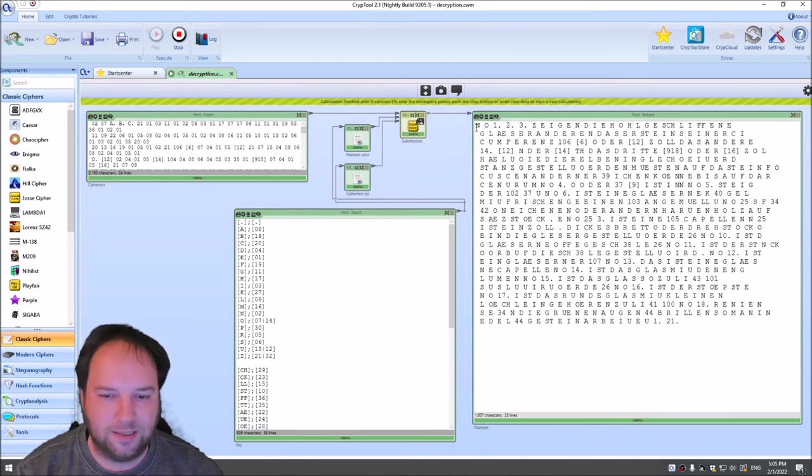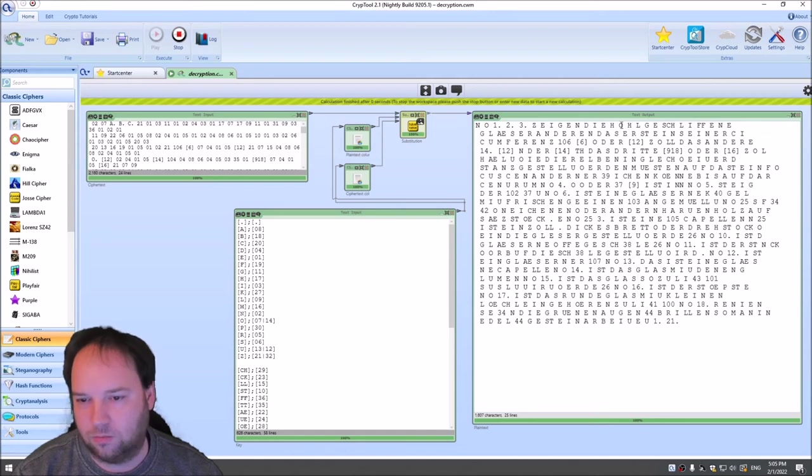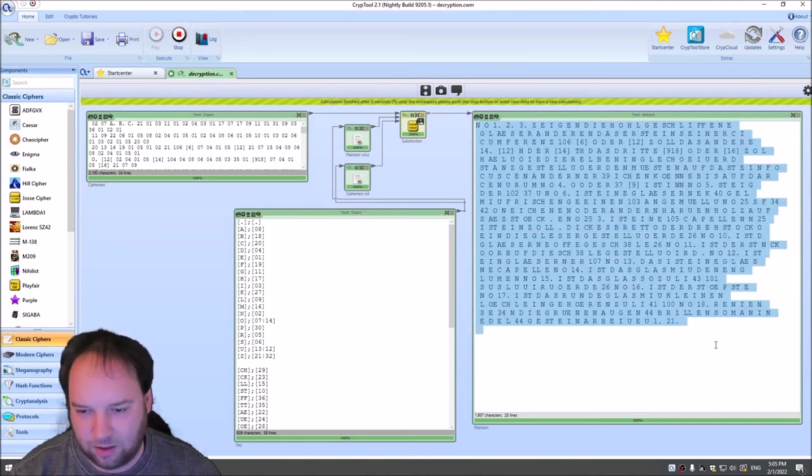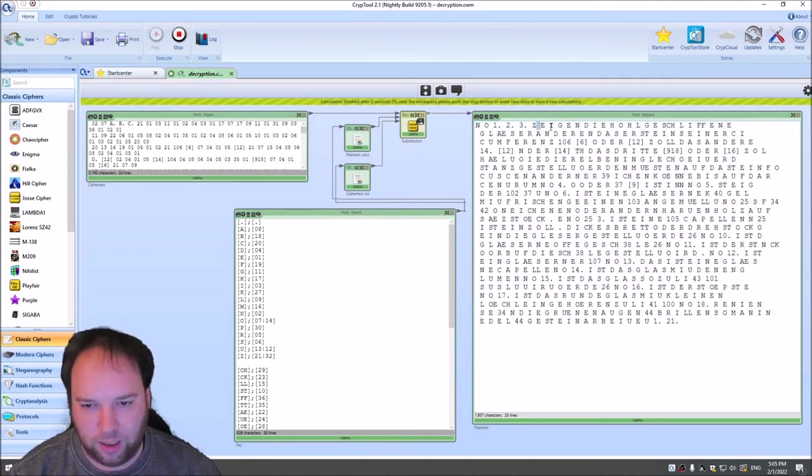And yet, as you can see here, number one, two, three, Zeigen die hohlgeschliffene Gläser. So number one, two, and three show the hollow, I don't know what the word in English is, the hollow made glasses, and so on and so forth. And here you can also see the non encrypted numbers in the text. And then what I did for fun, I copied this text out, and I tried to merge the words at separators between like spaces between the words, edit line breaks, and so on.